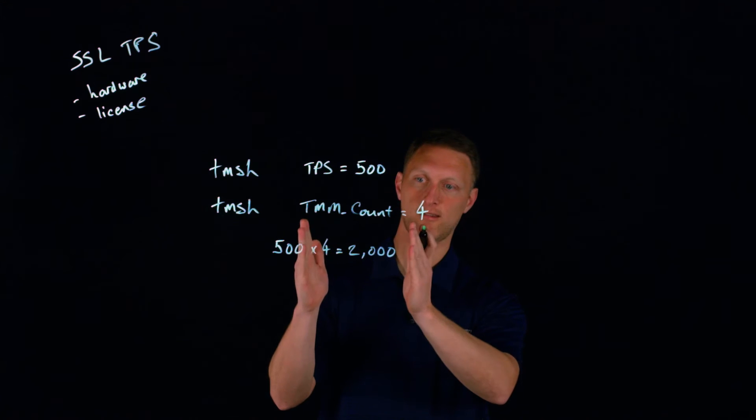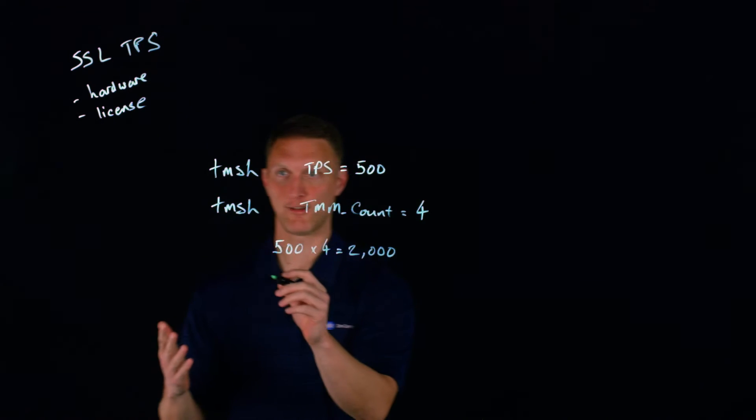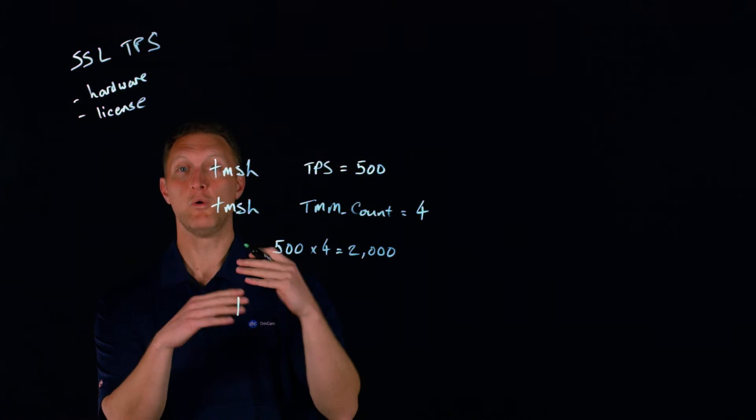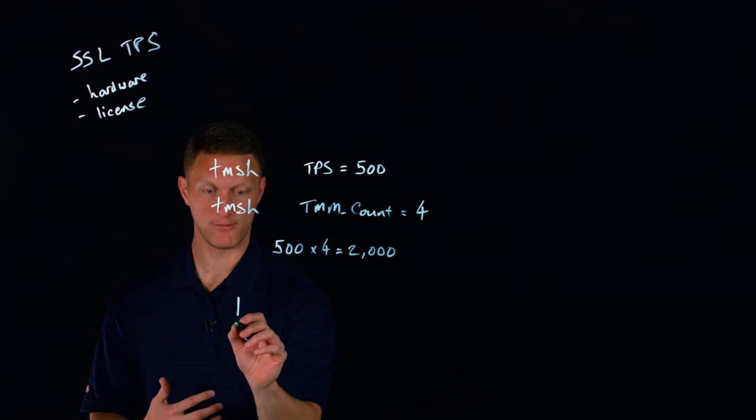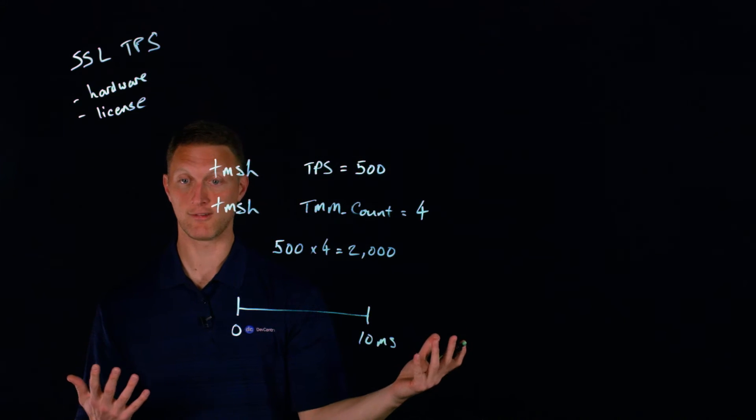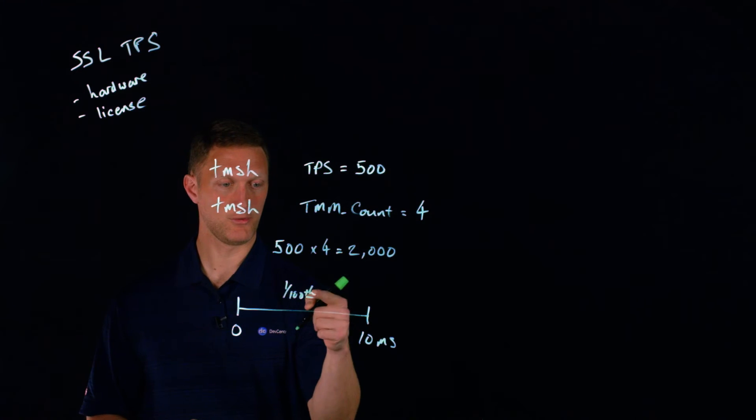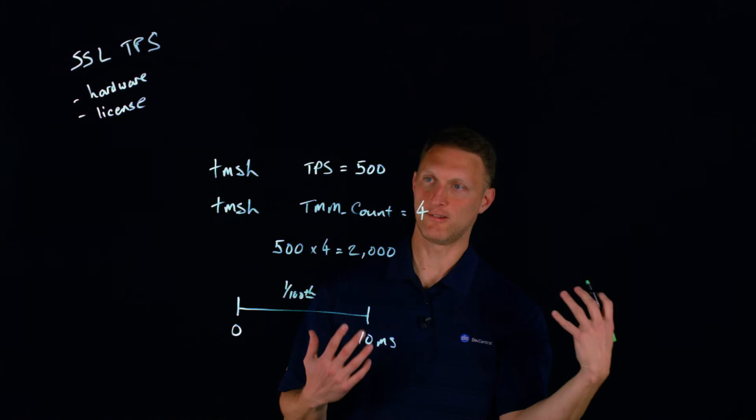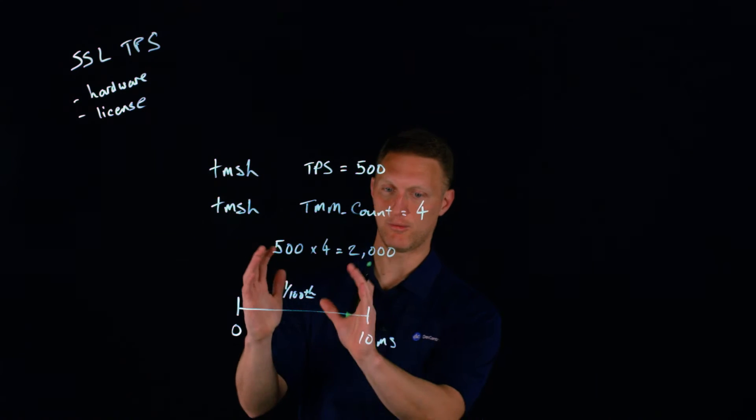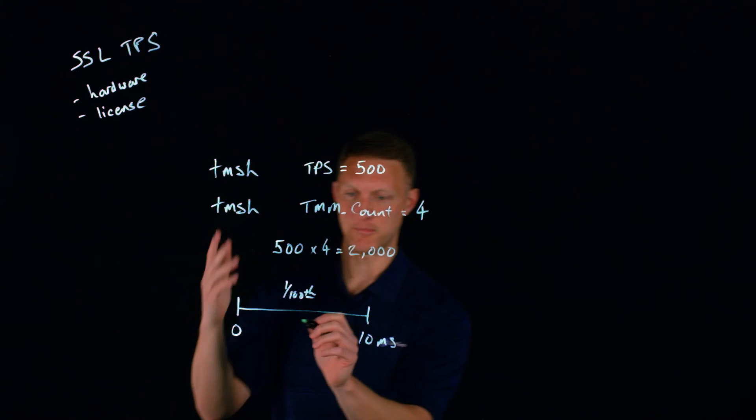The way that the Big IP looks at this is it slices a one-second period of time into smaller chunks. It slices that into one one-hundredth of a second time interval. So if this was time t equals zero and you came over here, this is 10 milliseconds, which is one one-hundredth of a second. Then what you're allowed to get is one one-hundredth of your allotted licensed transactions per second. Each TMM keeps count of this separately. For this specific TMM, using this example, one one-hundredth of 500 would be five.